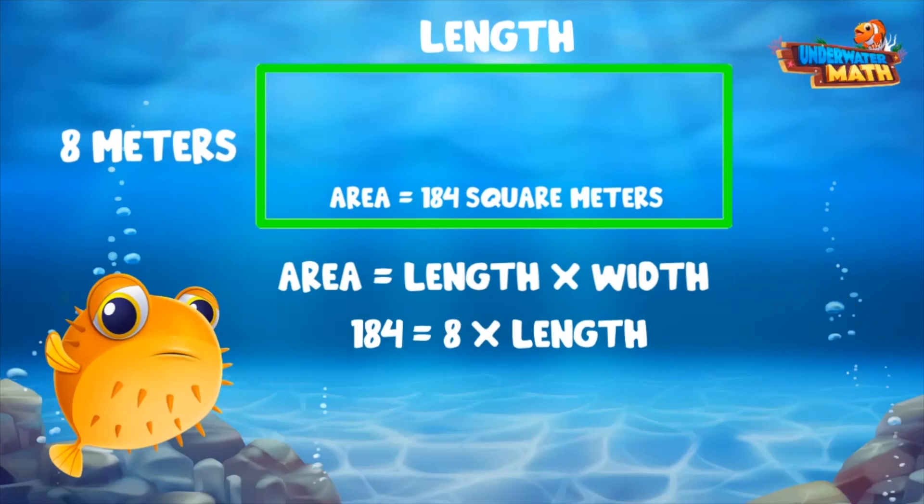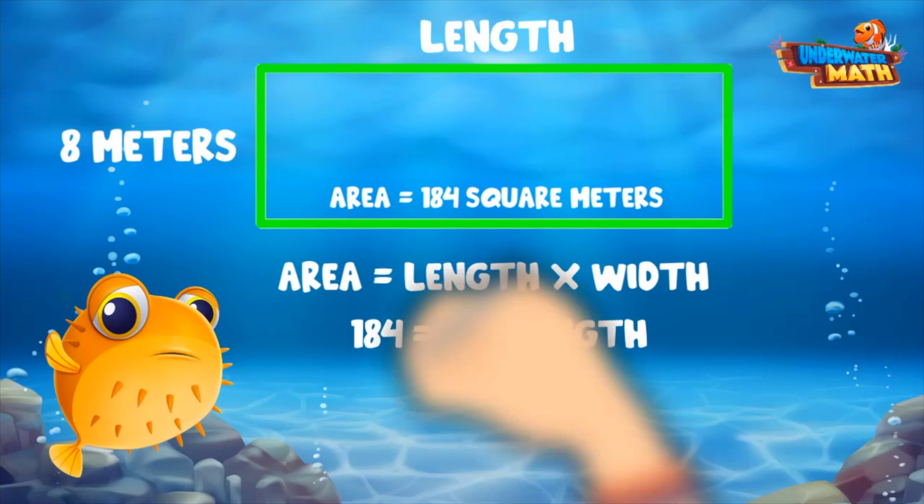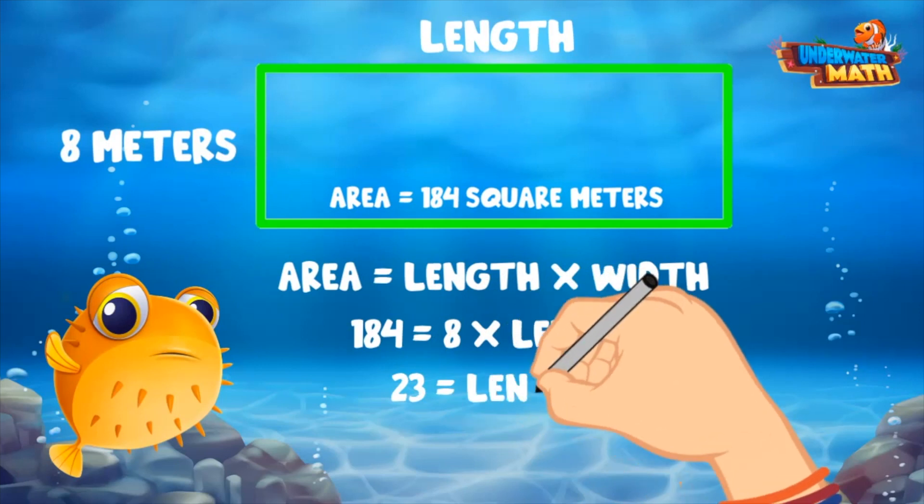We can divide 184 by 8 to find the length. 8 fits into 18 two times, and 8 fits into 24 three times. The answer is 23 meters.